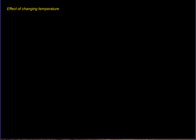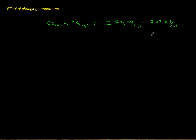Remember, this is an exothermic reaction. The equation has the heat of 202 kilojoules per mole on the product side. If temperature goes up, temperature is treated just like concentration — it is a quantity of heat. If temperature goes up for this exothermic case, the system shifts toward the reactants in order to reduce that temperature.